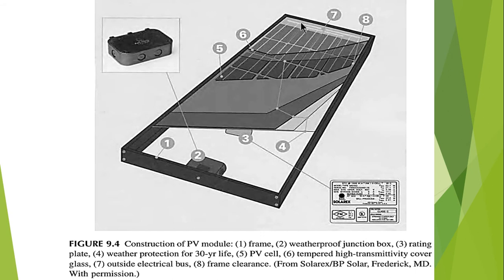Now let's discuss the tempered high-transmitting cover glass. The front glass sheet protects the photovoltaic cells from weather impacts such as hail or airborne debris. The glass is typically high-strength tempered glass, 3 to 4 millimeters thick, designed to resist mechanical loads and external temperature changes.